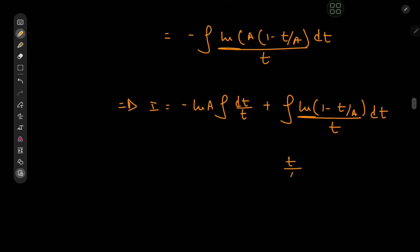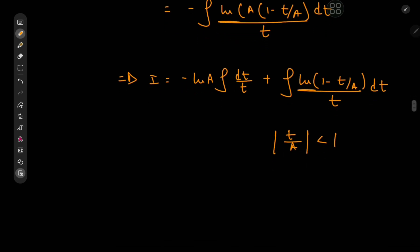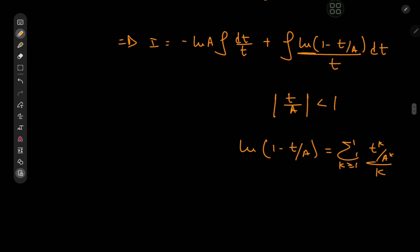The special case is for the absolute value of t by a being less than 1, because then we can expand the logarithm as an infinite series: log of 1 minus t by a equals the sum over positive integers k of t to the k divided by a to the k divided by k. This implies that I for the special case equals negative log a times log t plus the integral of 1 over t times the sum over k of t to the k divided by a to the k times k dt.